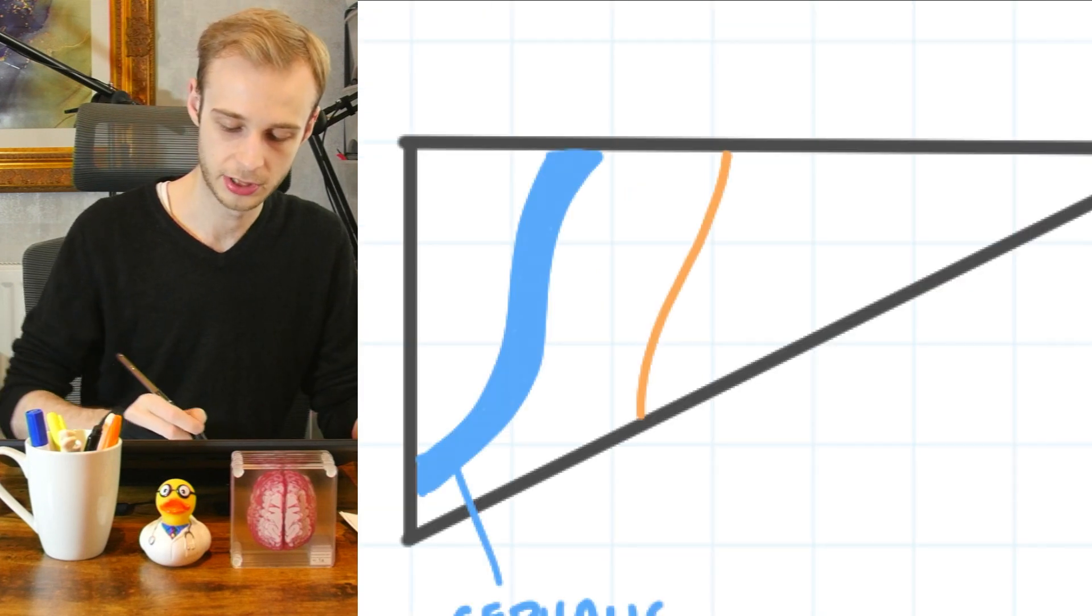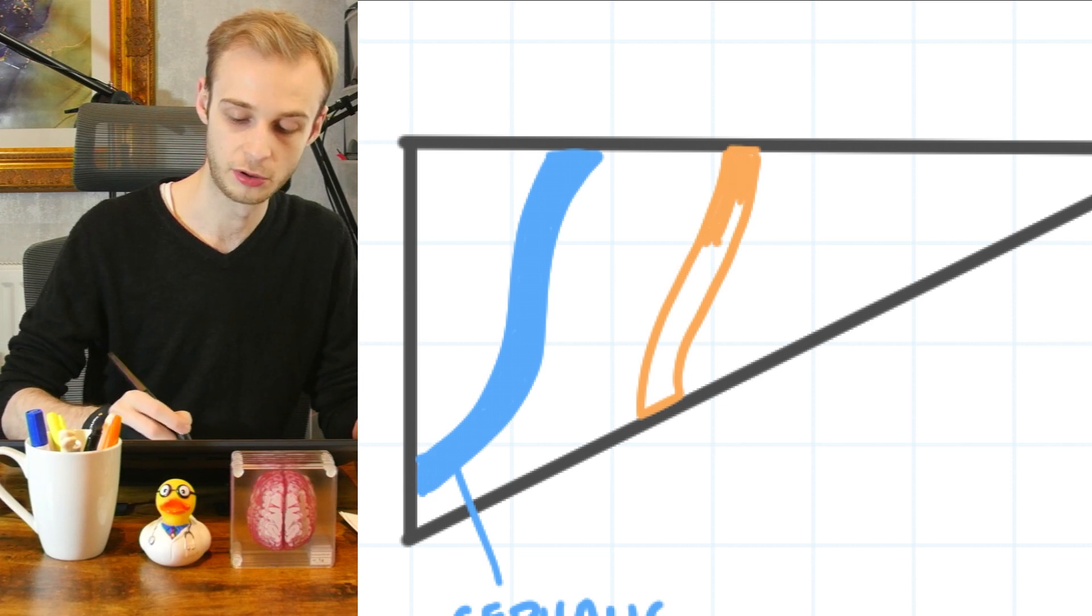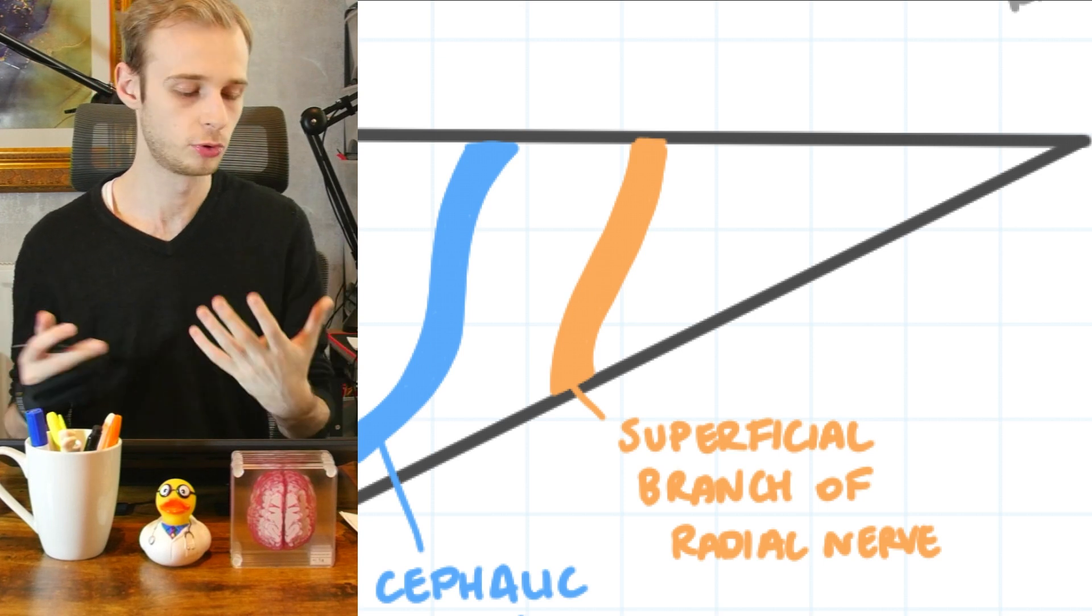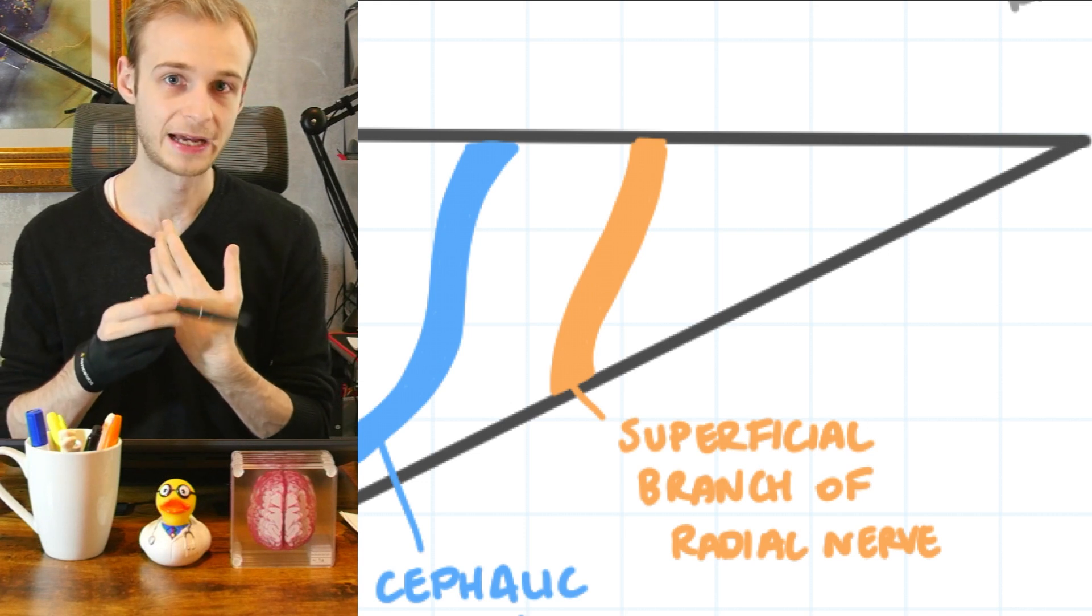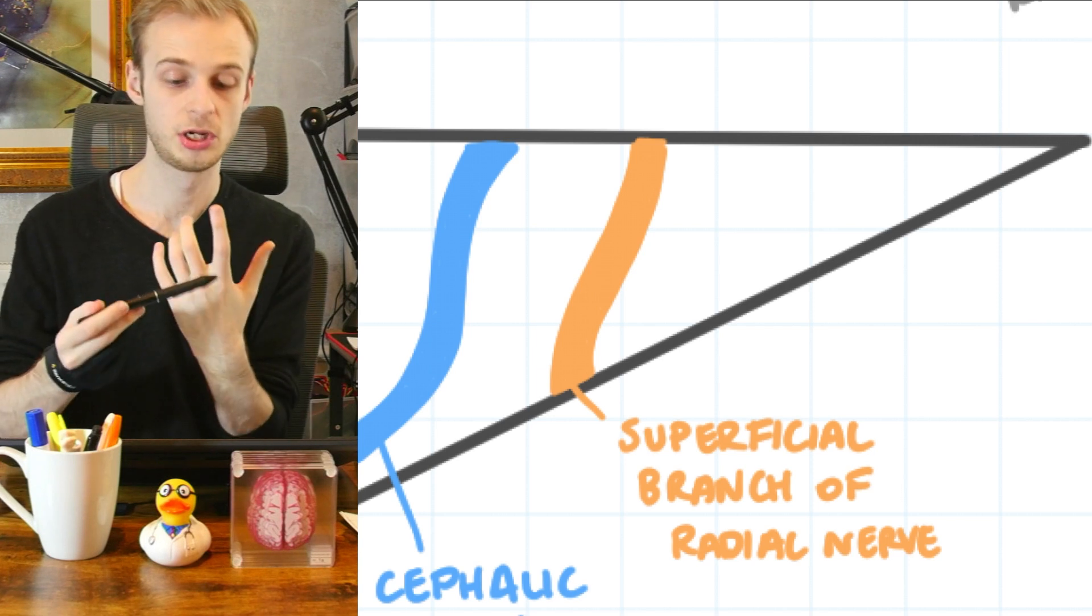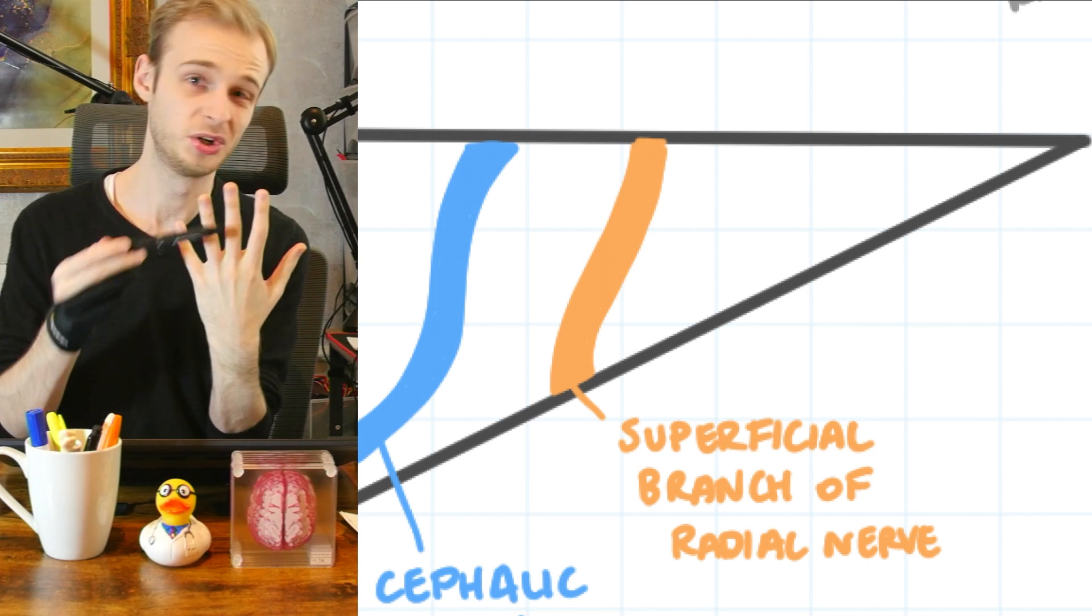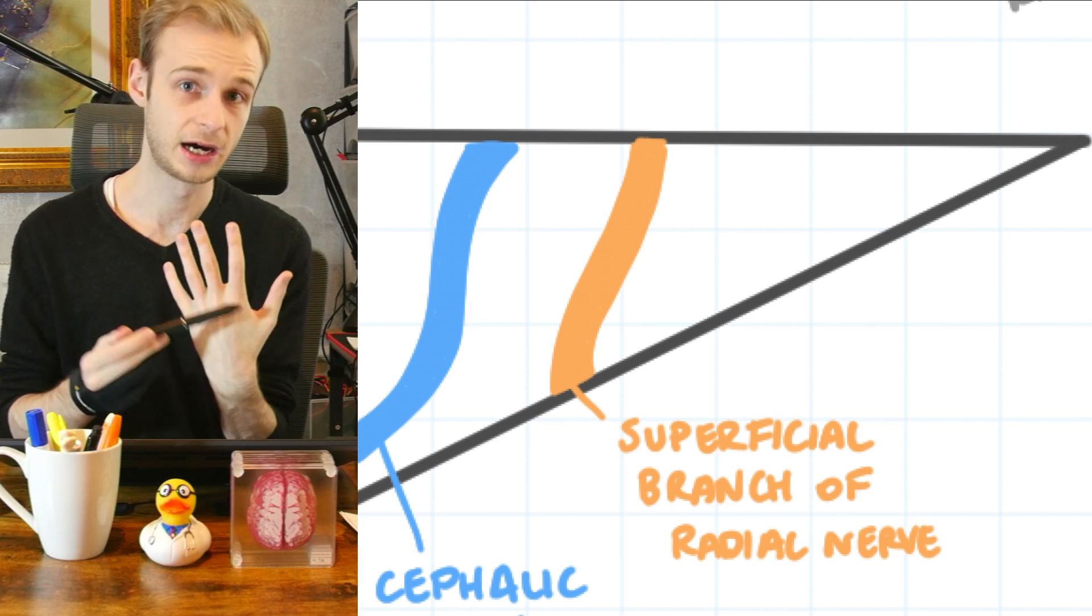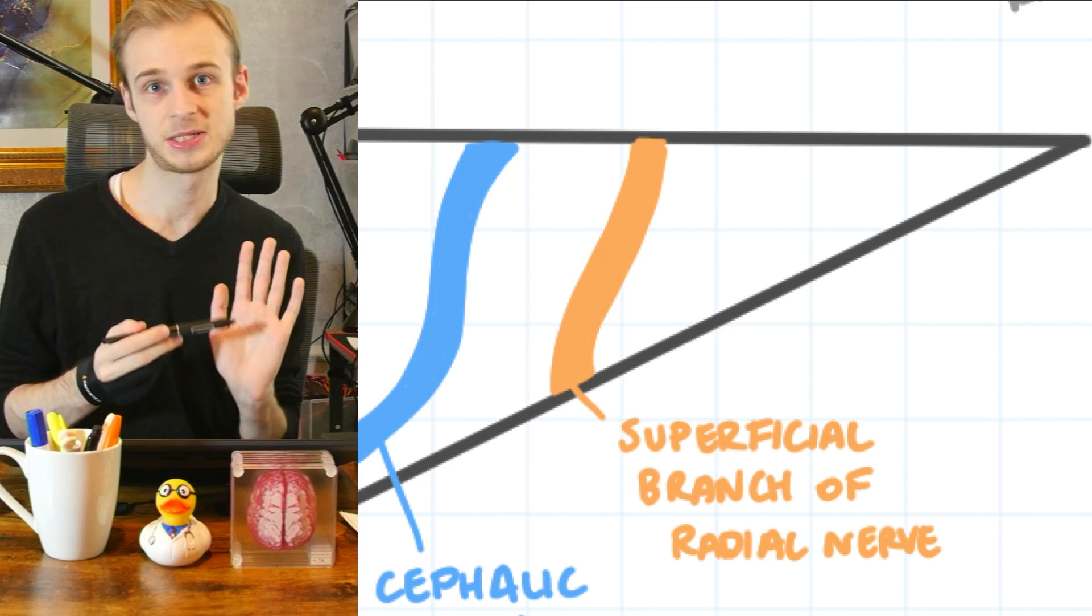The next structure that we're going to draw in is a nerve. And this is the superficial branch of the radial nerve. So we'll cover the sensory supply of the hand more fully in another video. But broadly speaking, the superficial branch of the radial nerve covers most of the proximal back of the thumb here. That is, it provides its sensory territory. The proximal two-thirds of the index and middle fingers. And then the lateral half, up to the sort of proximal two-thirds line of the ring finger, the lateral three and a half digits.